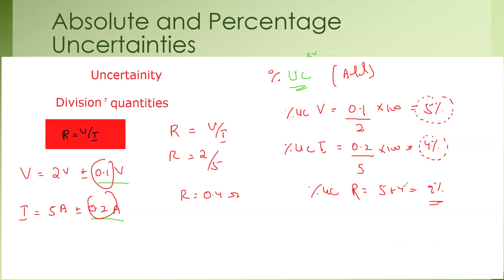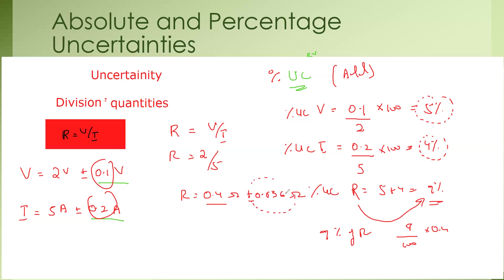The percentage uncertainty in the resistance is 9% and the value of the resistance is 0.4. So what is 9% of 0.4? It will be 9 divided by 100 multiplied by 0.4, which gives ±0.036 ohm. But we should use the minimum number of significant figures — one significant figure — so rounded off, the final answer will be ±0.04 ohm.